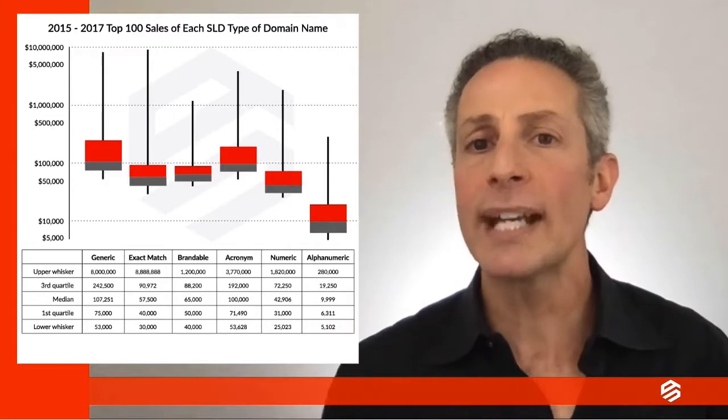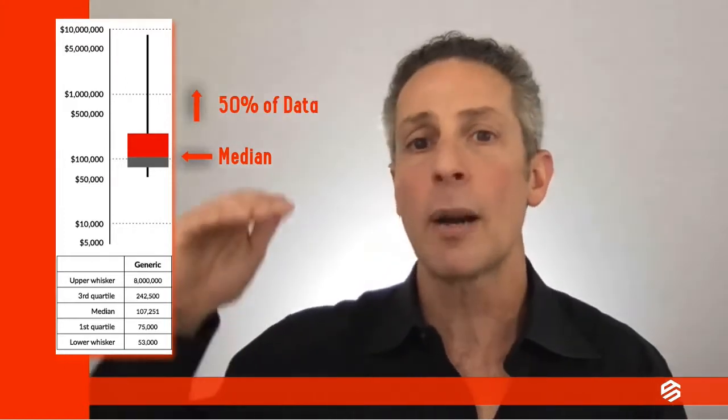And here's the data. But before we look at all of them, let's look at one — the generic SLD type of domain name, like apple.com or rose.com. Box plots always present the data in the same way. The top of the box is the first quartile, which means that 25% of the data lies above this number. The bottom of the box is the third quartile, which means that 25% of the data lies below that number. Therefore, 50% of all the data is within the box. The midpoint of the box is called the median and means that 50% of the data points are above and 50% are below that line.